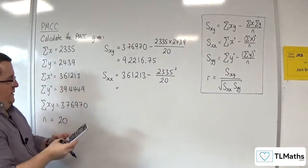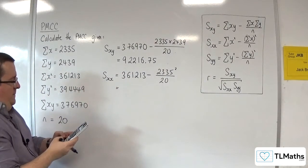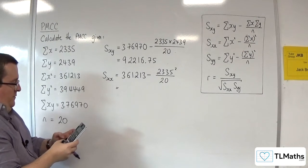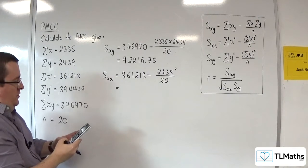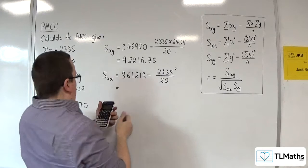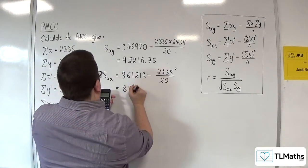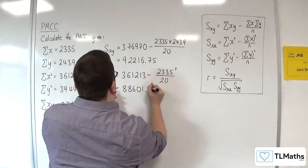So, 361213 take away 2335 squared divided by 20 is 88601.75.